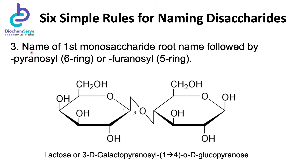Rule number three: the sequence is always the first monosaccharide root name followed by the term pyranosyl for a six-membered ring. In this example, the first monosaccharide is galactose and it is a six-membered ring, so the first term is galacto- followed by the suffix -pyranosyl. However, if it involves a five-membered ring, for example like in fructose, the term to be used is furanosyl instead.